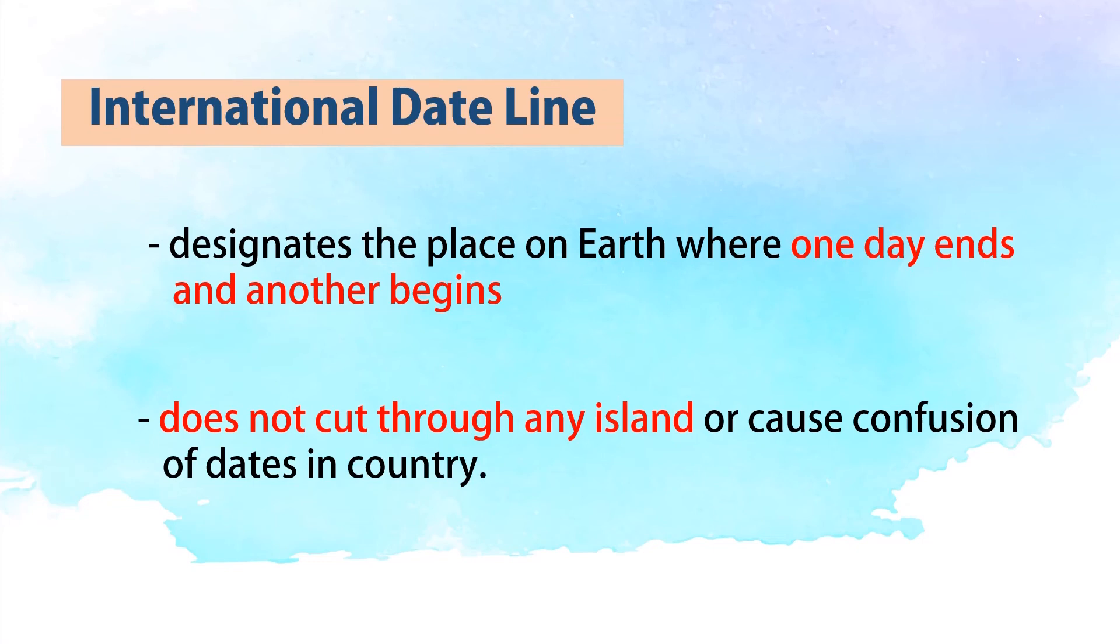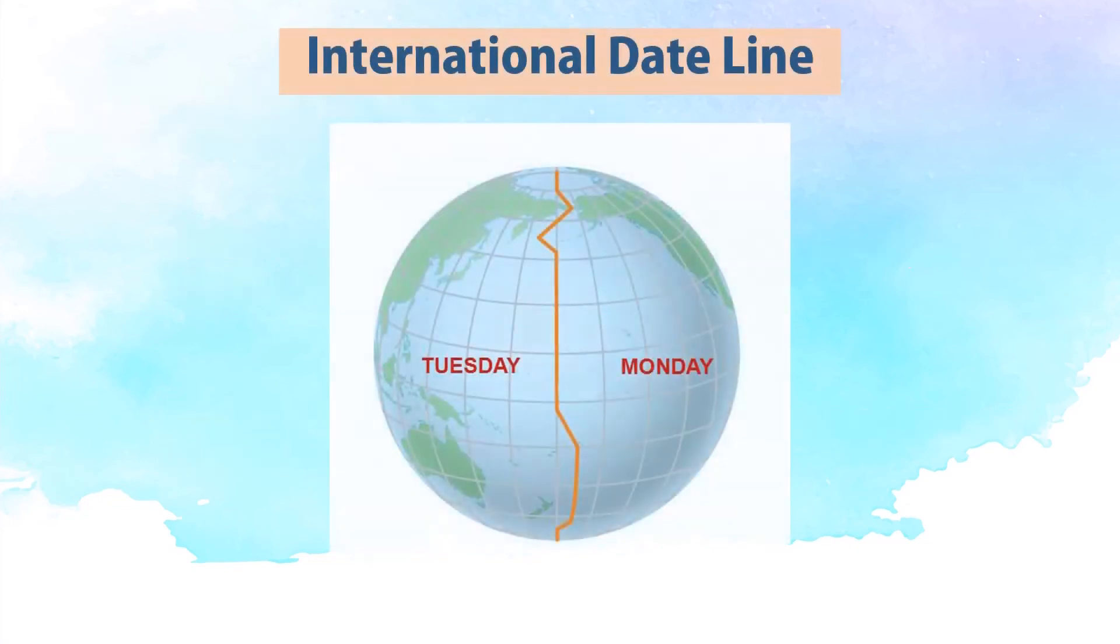When a ship crosses the international date line from west to east, it gains a day. From Monday, it will suddenly become Tuesday. However, if a ship comes from east to west, they lose a day. Thus, from Tuesday they will adjust the day back to Monday.